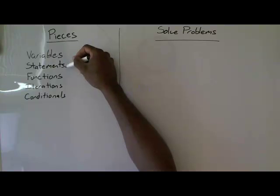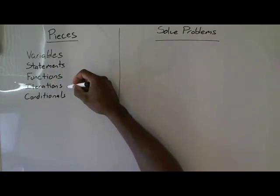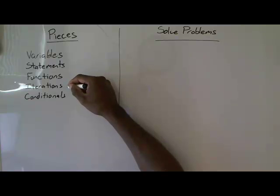Functions are bundles of those statements which allow us to reuse certain pieces of code and reuse groups of statements. Iterations allow us to do things over and over, which computers are very good at. A computer doing something a million times is very trivial as opposed to a human, and that's where computers are very helpful.